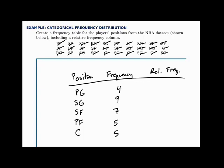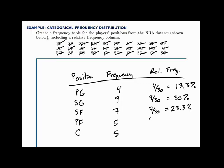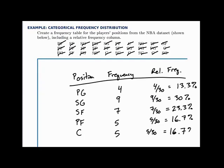For the relative frequency, we divide each frequency by the total number in our sample, which is 30. For the relative frequency of point guards, we divide four by 30, which comes out to about 0.133 or 13.3%. Then nine divided by 30 works out to 30%. Seven out of 30 is 23.3%. And five out of 30 is about 16.7% for both of the last two categories. A frequency table is pretty easy to construct — all you have to do is count how many fall into each category.